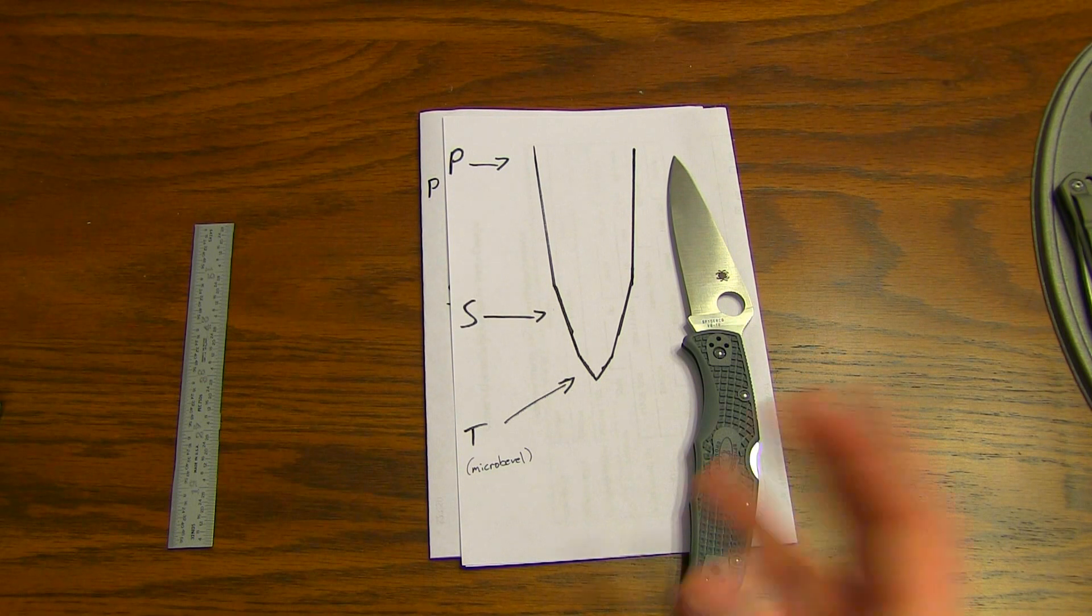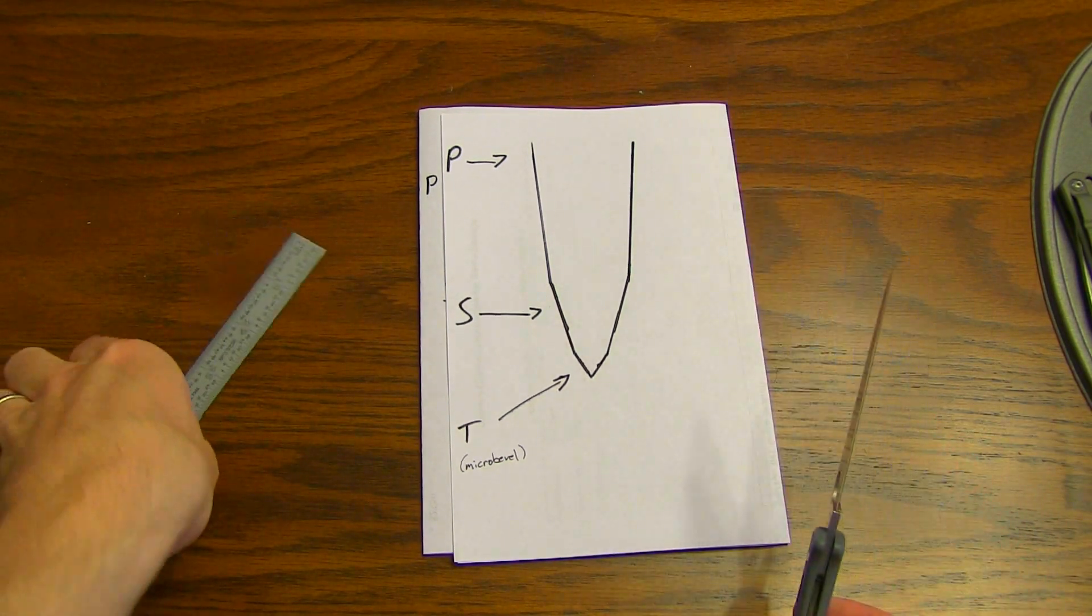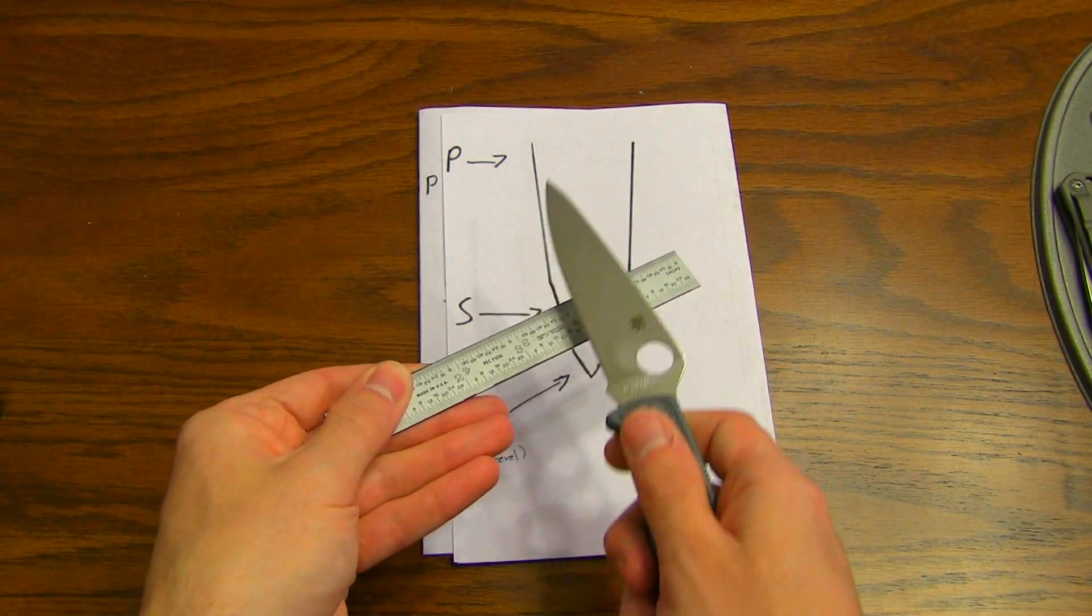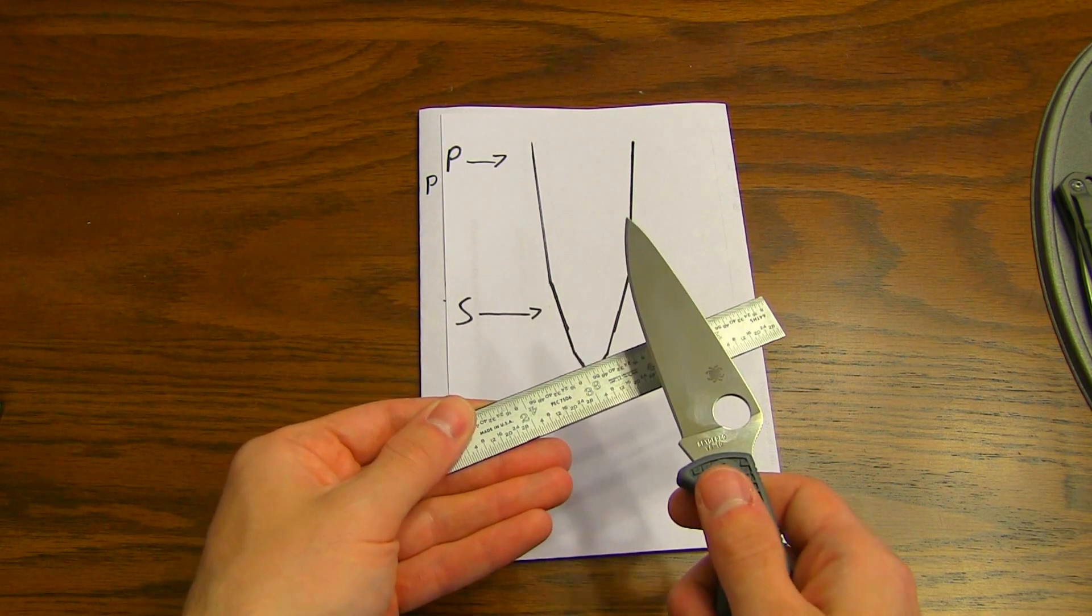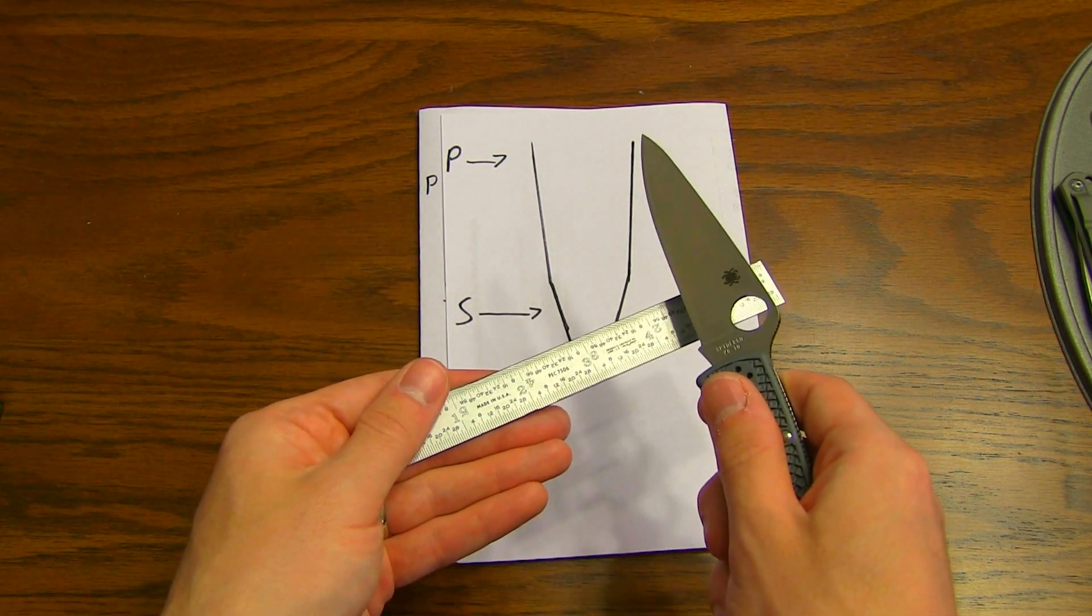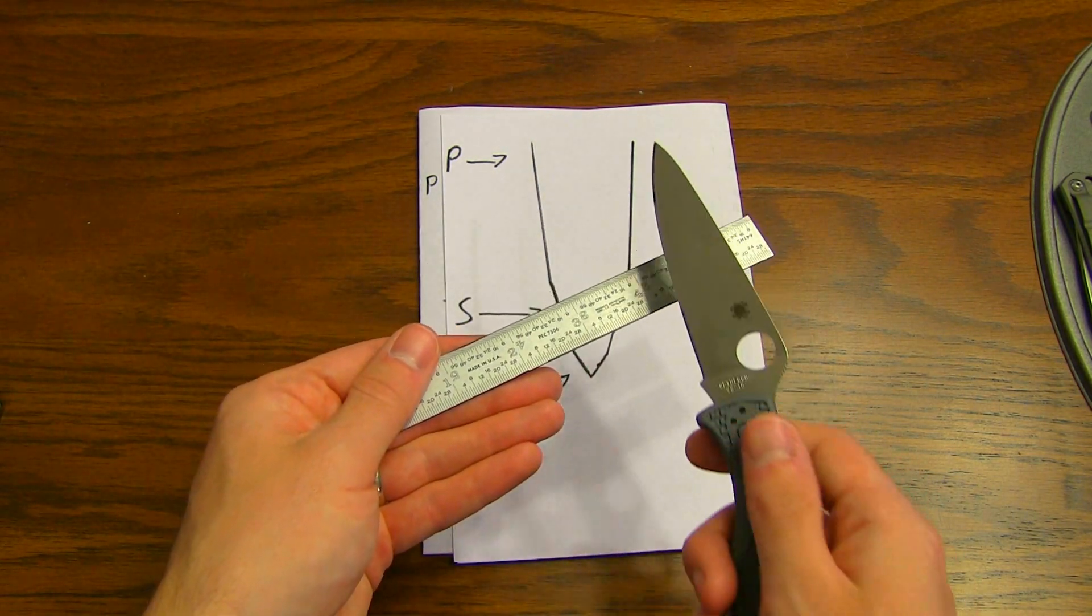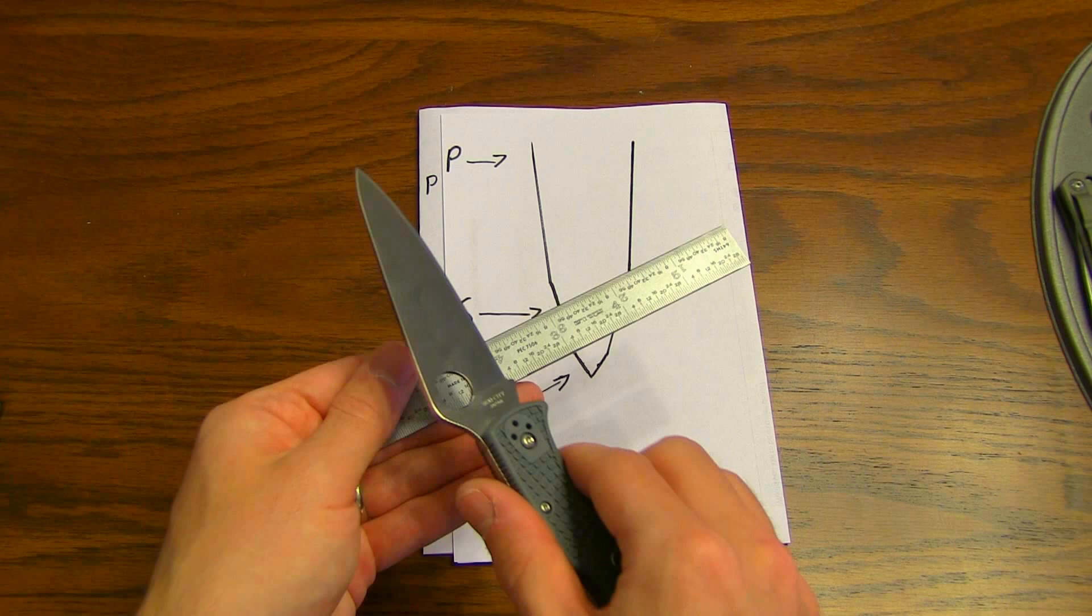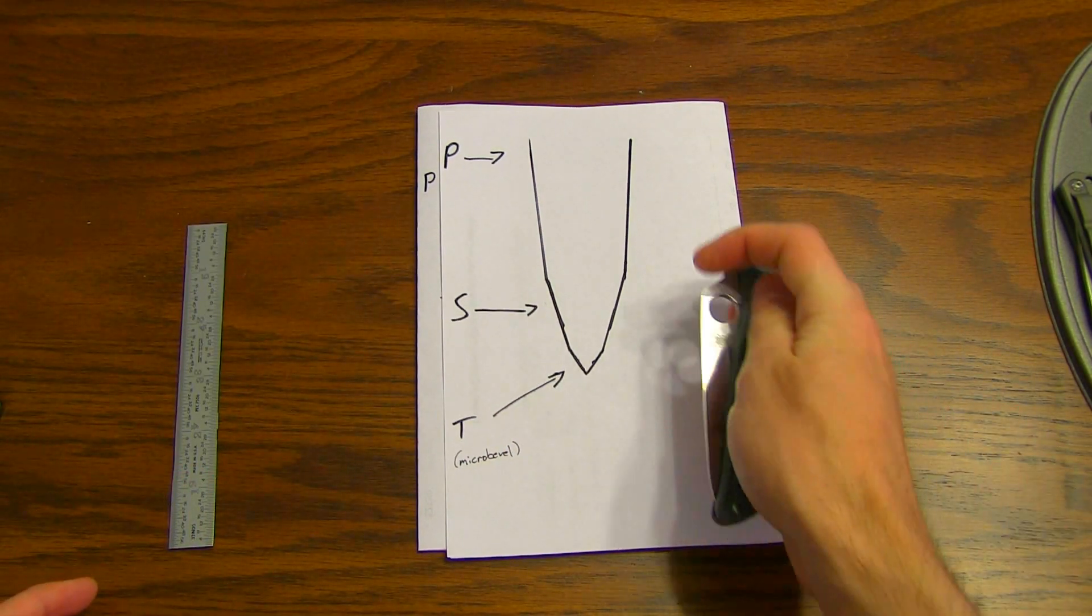You don't have to have something like a Sharpmaker to set a micro bevel. Say you're sharpening freehand and you're sharpening at this angle, which we'll just call 15 degrees. When you're done and you've created a sharp edge, you will actually increase your angle a good bit and then do a series of extremely light strokes on a very fine stone. And that will apply a micro bevel as well.